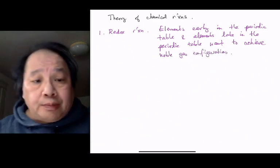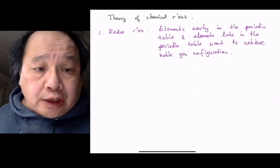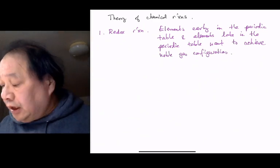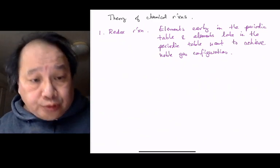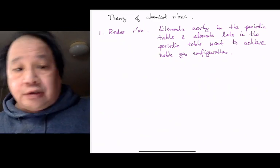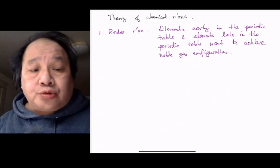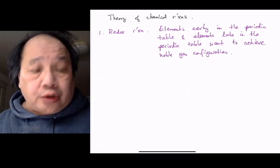When an element early in the table loses electrons, gets oxidized to reach a noble gas configuration, and an element late in the periodic table gains electrons, becomes reduced to reach a noble gas configuration that is extraordinarily stable and extraordinarily energetic.